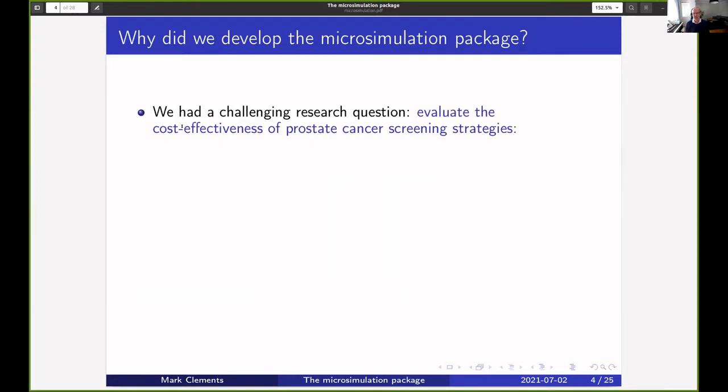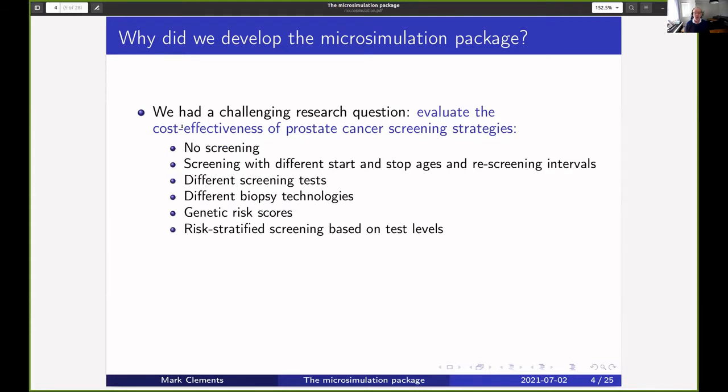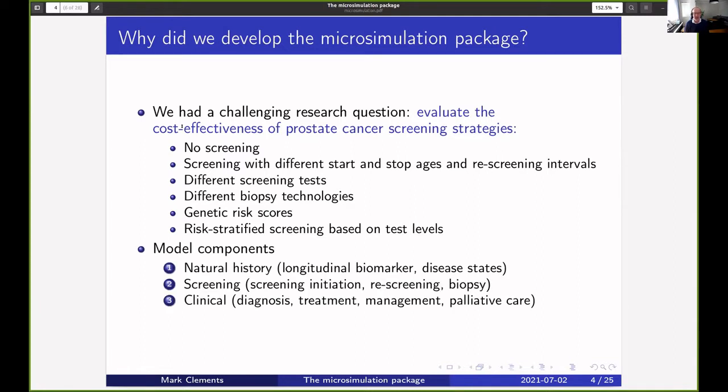We had a challenging research question. We wanted to evaluate the cost-effectiveness of a range of prostate cancer screening strategies that could include no screening or screening with different start ages, stop ages, and re-screening intervals. We also want to investigate different screening tests, different biopsy technologies, and Edna Kenny suggested we look at introducing genetic risk scores and risk-stratified screening based on PSA levels. It's more complex. We've got a natural history component, a screening component, and a clinical component. We're trying to find a model framework that is appropriate for the research question.